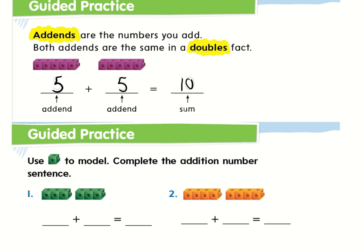Now, double facts are very important — you guys are going to need to know all of these because they are going to help you with your math. So for this one down here, we're going to use the first addend, which would be three, because I have three green blocks and then three more. And if I count them up, I have one, two, three, four, five, and six. And then over here on number two, I'm going to have one, two, three, four — so four plus four.